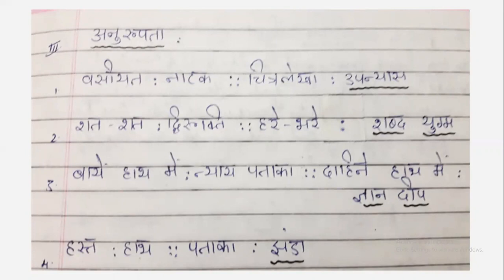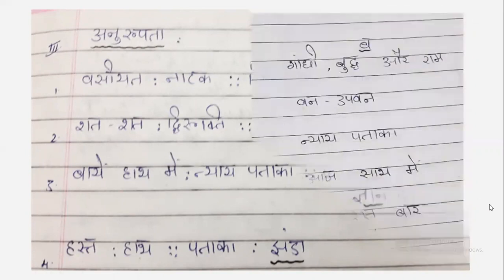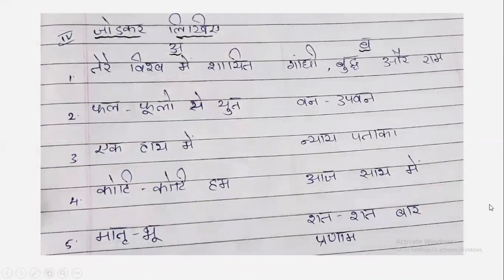Now the next main section is 'Jod kar likhiye' — match the following. Tere vishp mein — Gandhi, Buddh aur Ram. Here 'tere' is representing motherland; the poet is saying in the motherland Gandhi, Buddh and Ram exist or stay. The next is: fal phoolon se yukt — van upavan; forests are decorated with fruits and flowers.